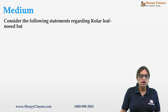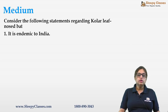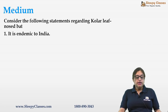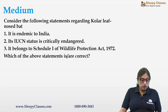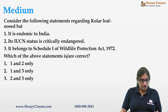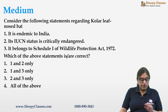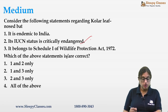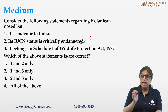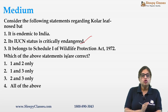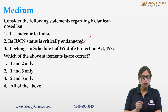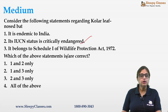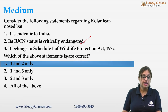Next question is about Kolar Leaf-nosed Bat. Given three statements: it is endemic to India; its IUCN status is critically endangered; it belongs to Schedule 1 of the Wildlife Protection Act of 1972. The correct answer is one and two — endemic to India and critically endangered are correct. It was found in only one cave in Hanuman Halli village.